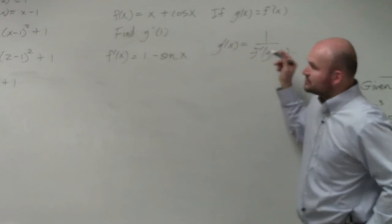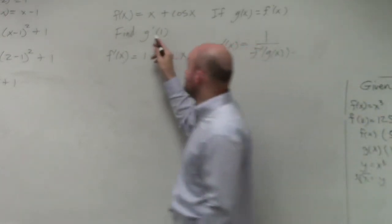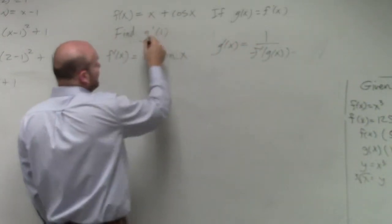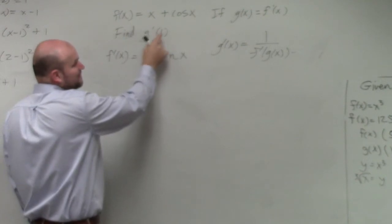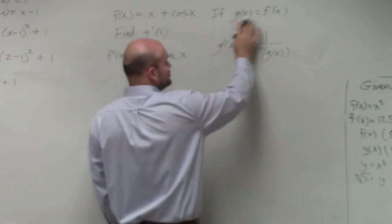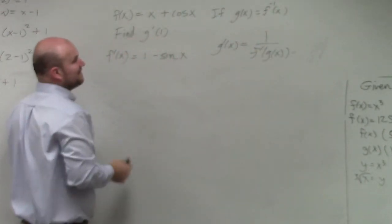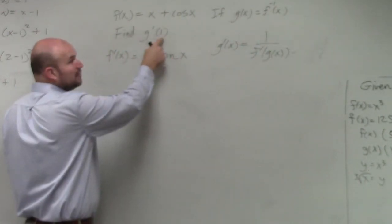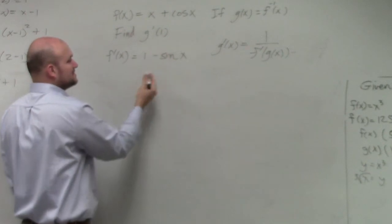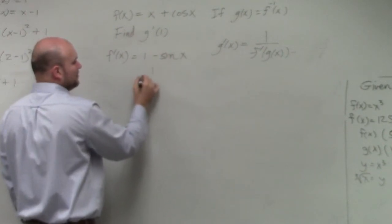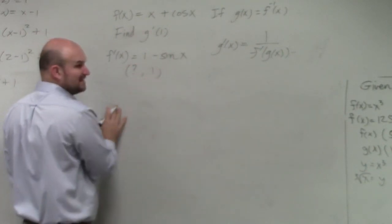But we also need to understand how x and y relate. So we know we have g prime of 1, or that's what we're trying to figure out, but remember, g of x equals f inverse of f of x. So therefore, that's your output. We need to figure out what the input is. So basically, we're given the output, but we don't know what the input is.